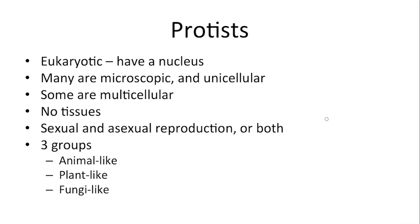There are some features that we want to make sure we understand that protists have. First of all, they are eukaryotic organisms, meaning they have a nucleus. So even though many of them are microscopic, just like prokaryotic cells or bacteria, and many of them are single-celled organisms, they are not bacteria, they are not prokaryotic cells because they're eukaryotic organisms. They have a nucleus and maybe other organelles.